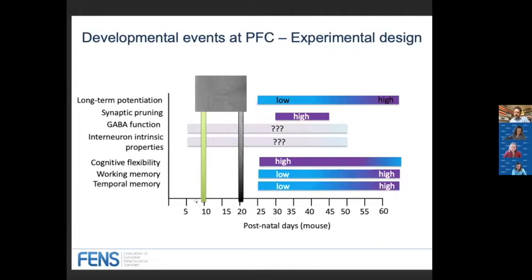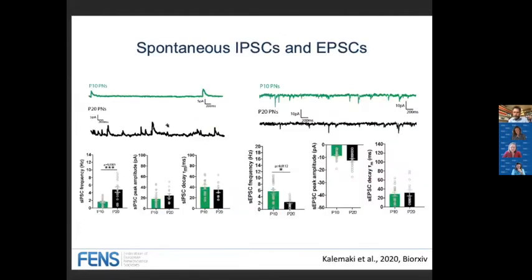During synaptic pruning in the PFC, long-term potentiation starts to emerge initially low and increases, becoming higher after synaptic pruning in adulthood. Similarly, working memory and temporal memory — two functions dependent on the PFC — emerge during early adolescence but are significantly improved in adulthood after synaptic pruning. Very little information is known about GABAergic function in the PFC, either the switch from depolarizing to hyperpolarizing or the maturation of interneuron properties. In our lab, we set out to understand these neurodevelopmental events.